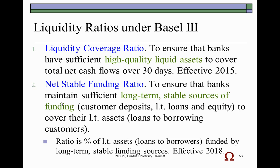Both liquidity ratios are designed to assess the financial strength of the bank. The first, the liquidity coverage ratio, is designed to ensure that banks have sufficient high-quality liquid assets to cover total net cash flows over a 30-day period. High-quality liquid assets include cash in the vault plus short-term high-quality investment securities such as treasury bills, which are readily converted to cash.